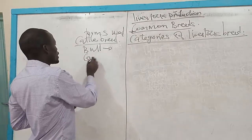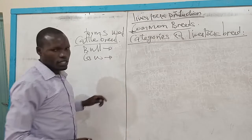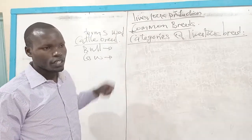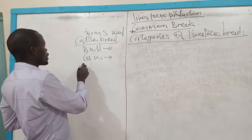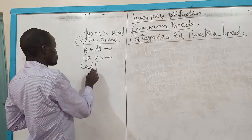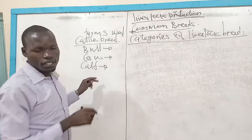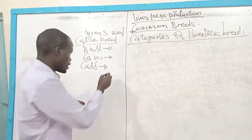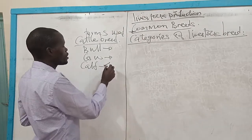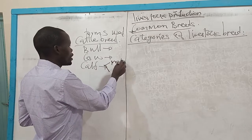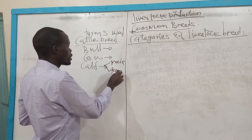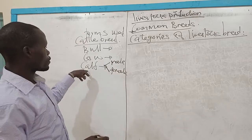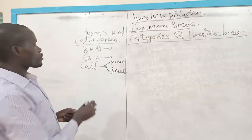We also had a term like a cow, and we say a cow is a mature female cattle. The next term we also had was a calf — this is a young one of cattle of any sex, meaning it can either be a male or a female.